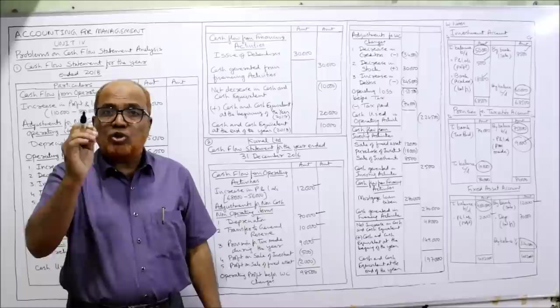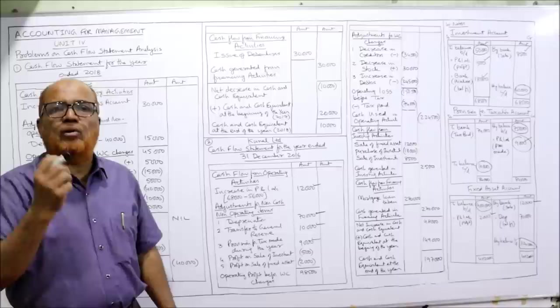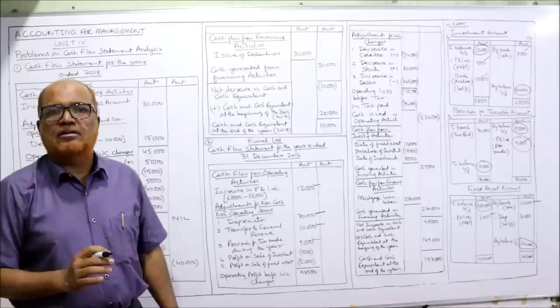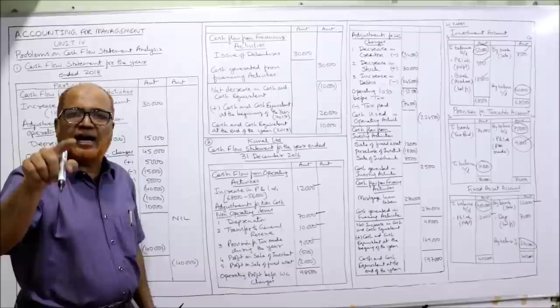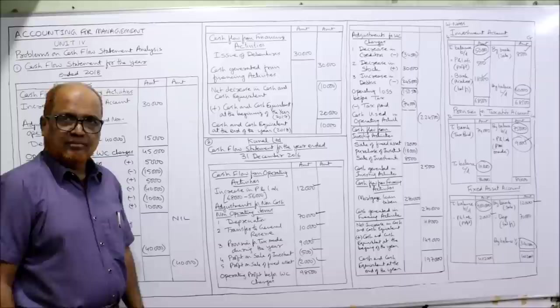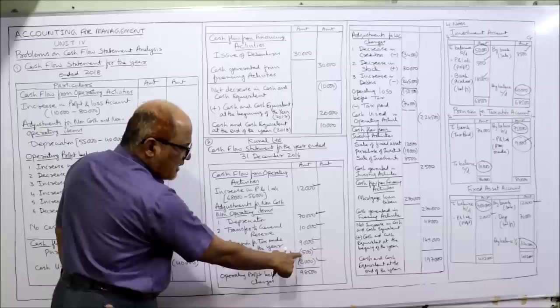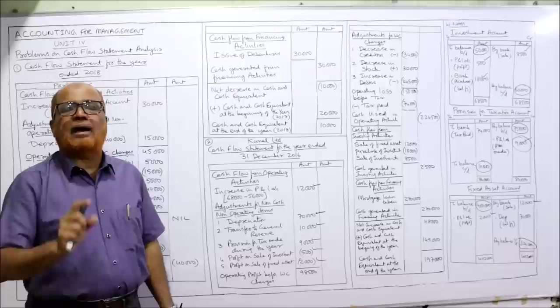Total: 12,000 plus 70,000 plus 10,000 plus 9,000 minus 500 minus 2,000 equals 98,500. This 98,500 is the operating profit before working capital changes. Now adjustment for working capital changes: increase in current liability and decrease in current asset should be added — remember that one rule and the second rule follows automatically.